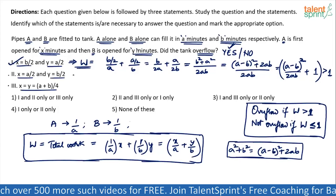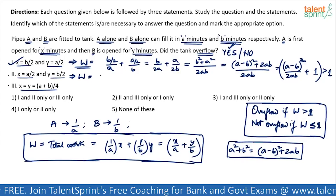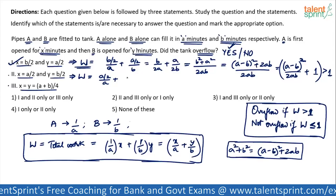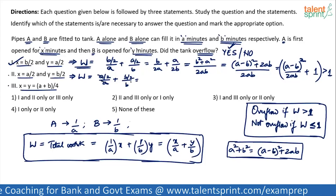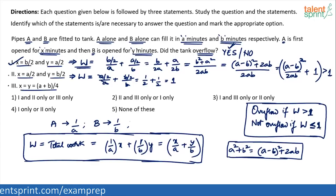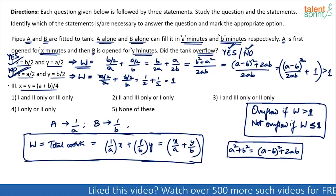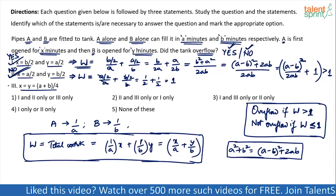For statement 2, X = A/2 and Y = B/2. So W = (A/2)/A + (B/2)/B = 1/2 + 1/2 = 1. We got W equal to 1 — the tank will be exactly full to the brim, so it will not overflow. This time we get the answer 'no.' So is statement 2 sufficient? Yes, still sufficient! Statement 1 says yes, statement 2 says no, but both are giving a definite answer. When they are not giving any answer, then you say it's not sufficient.